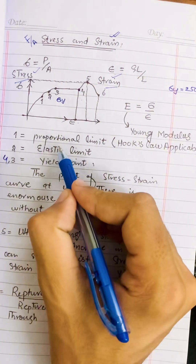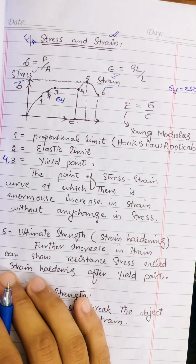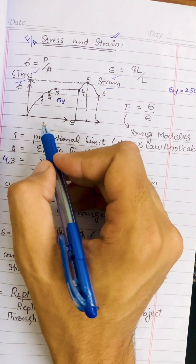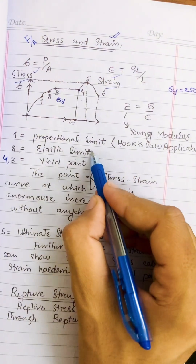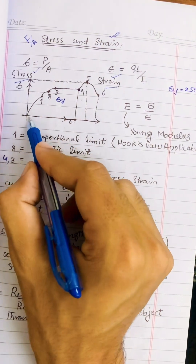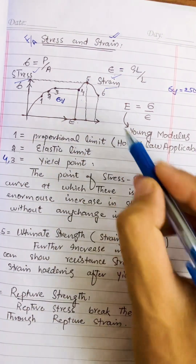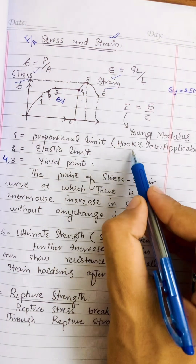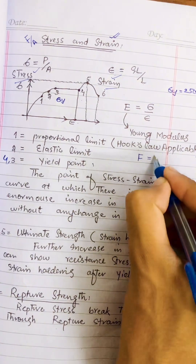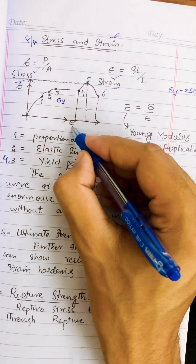The key points on the stress-strain curve are: proportional limit, elastic limit, yield point, ultimate strength, and rupture strength. At the proportional limit, when stress is applied, strain increases proportionally — stress is directly proportional to strain. This is the application of Hooke's Law, which states that when force is applied on a body it will deform proportionally.